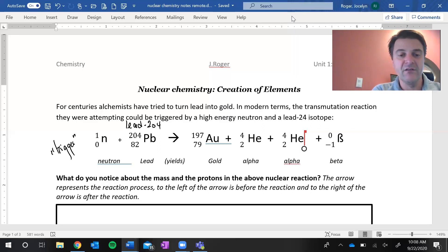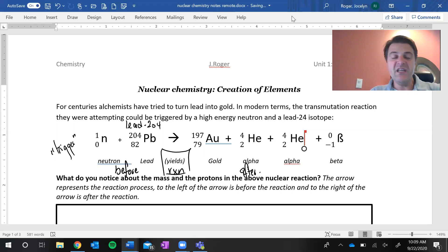We see that we started with our triggering neutron, and this neutron would come in and hit this isotope of lead-204, and then it would trigger this nuclear transformation, this nuclear reaction. On the other side, we get gold, and then we could possibly get these two alpha particles, which we're going to talk about in the next class, as well as a beta particle, also the topic of the next class.